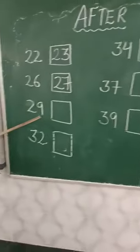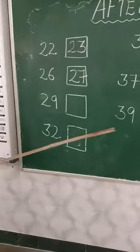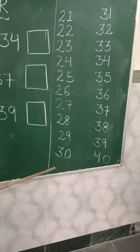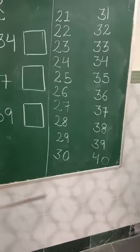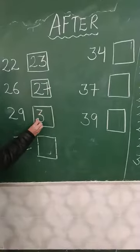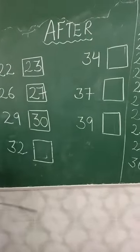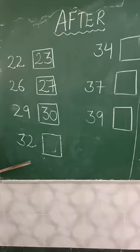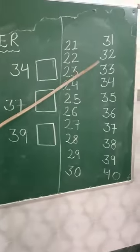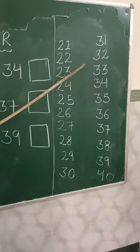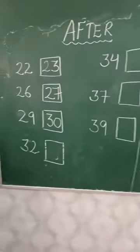The next number is 29. What comes after 29? 30. Very good. The next number is 32. What comes after 32? 33. Very good.